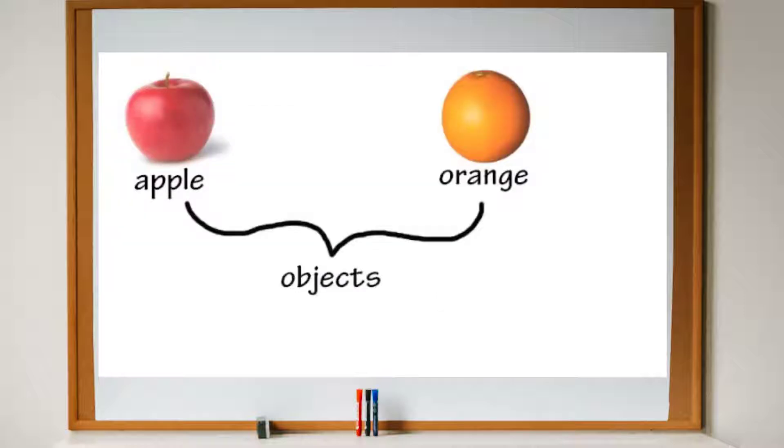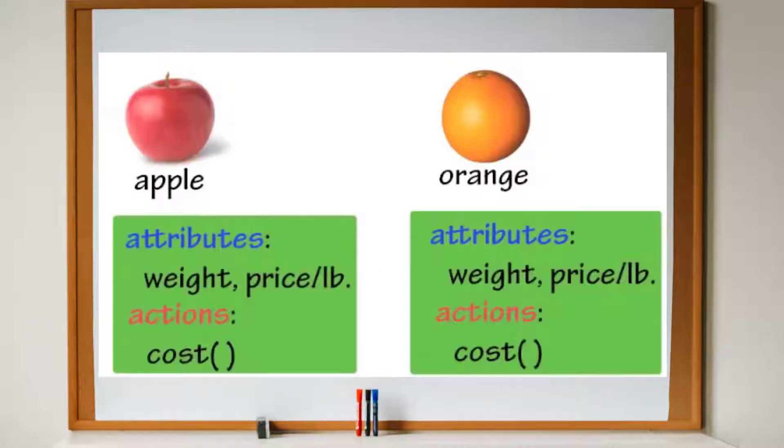Apple and oranges are fruits. Both are objects of the class fruit. They have similar attributes because they are both from the same class. They also have the same action, which is to cost something.